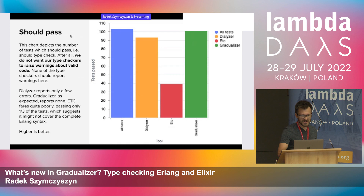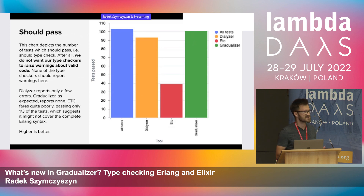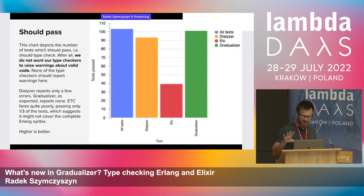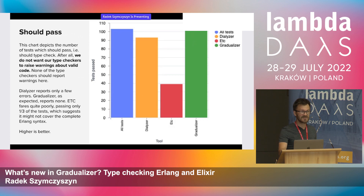Looking at whether type checkers accept valid code: the blue bar shows the total tests. Since these are Gradualizer tests, Gradualizer passes all of them. Dialyzer is mostly on par. ETC only passes roughly one-third of tests, which hints it may not yet be fit for daily or production use.